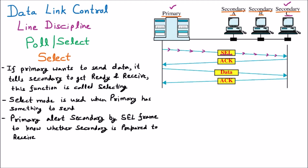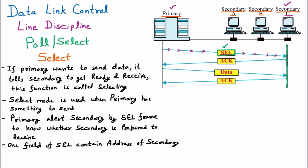One field of the select frame contains the address of the secondary. This select frame has a specific portion — a header — that contains the address of C. So this select frame will go only to station C; it will not go to A or B. The select frame reaches C only because the select field contains the address of the secondary.